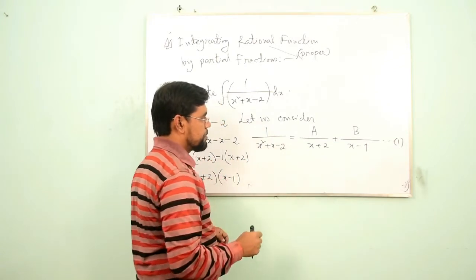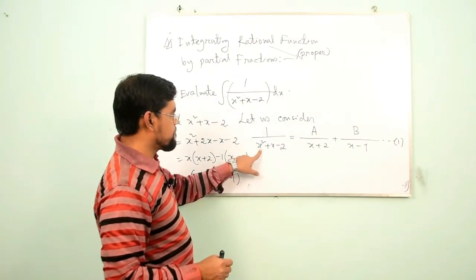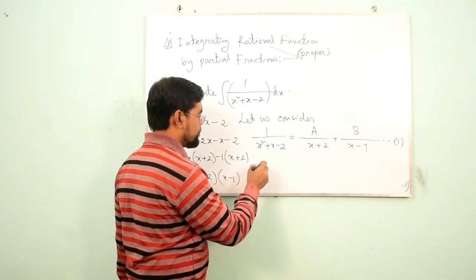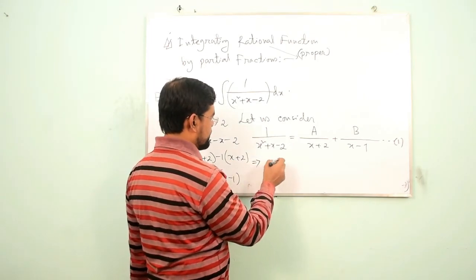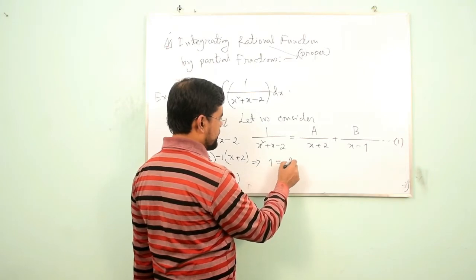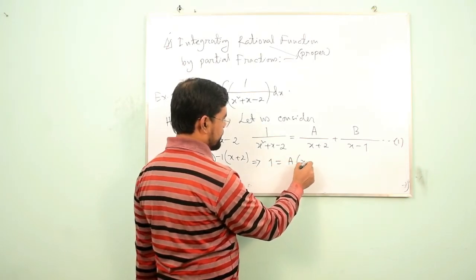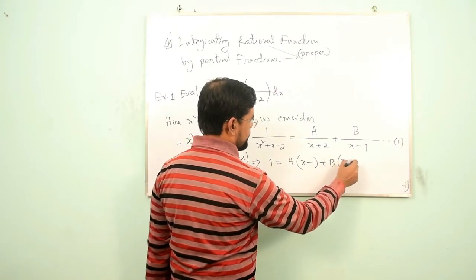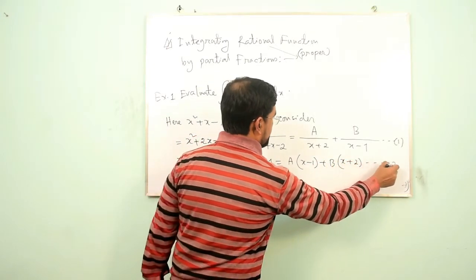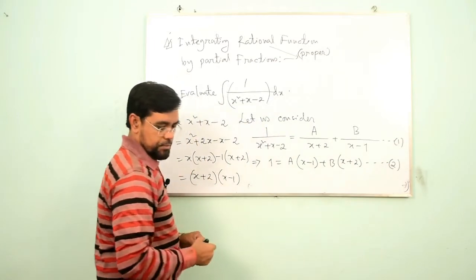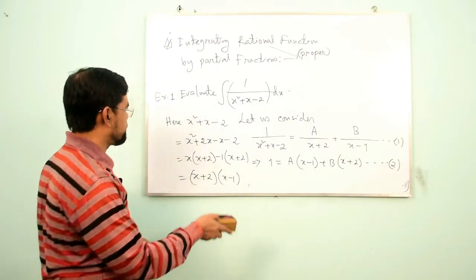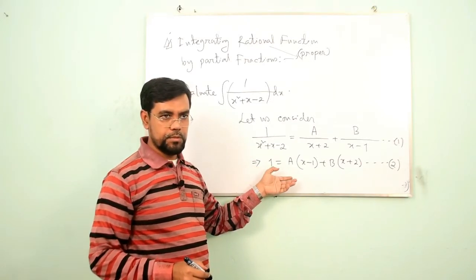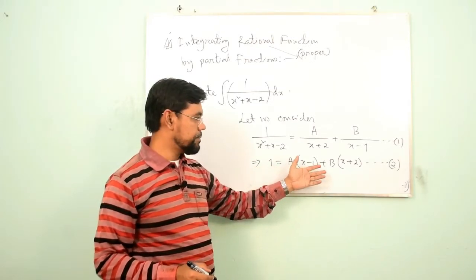Multiplying both sides of Equation 1 by the denominator (x² + x − 2) gives: 1 = A(x − 1) + B(x + 2). Let us call this Equation 2. Now we want to calculate the unknown quantities A and B.